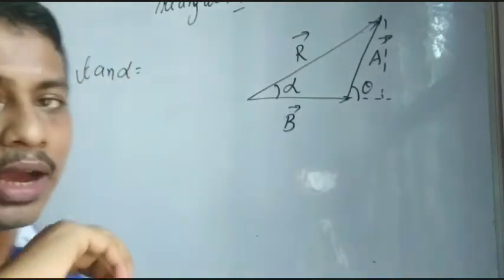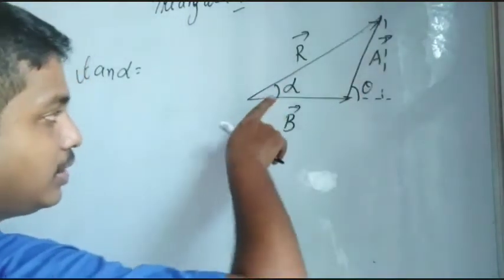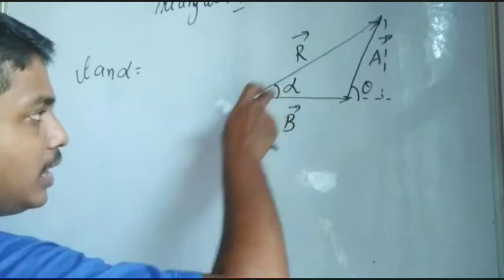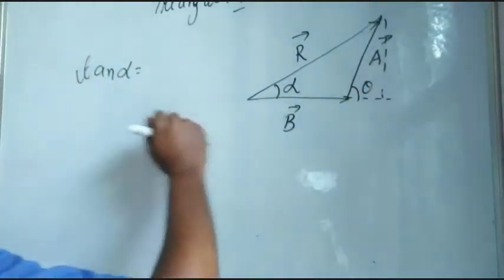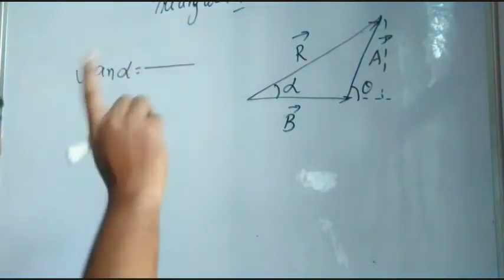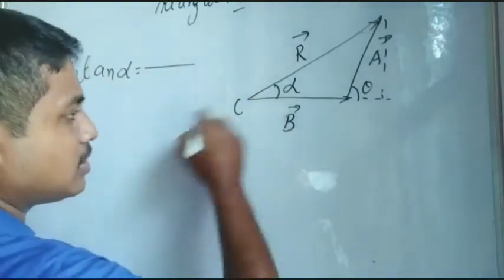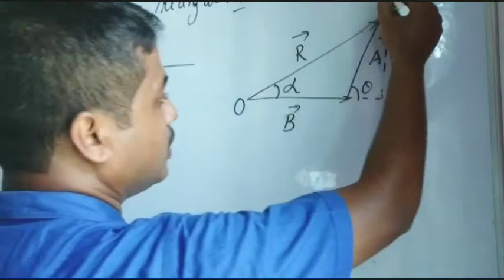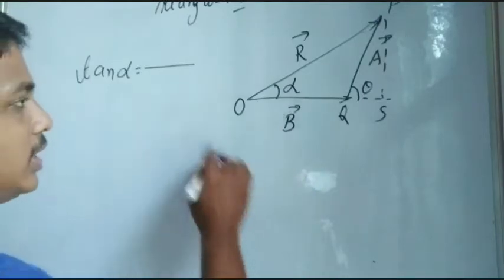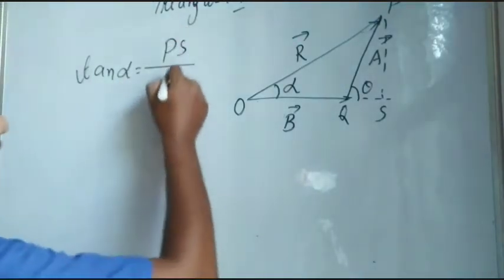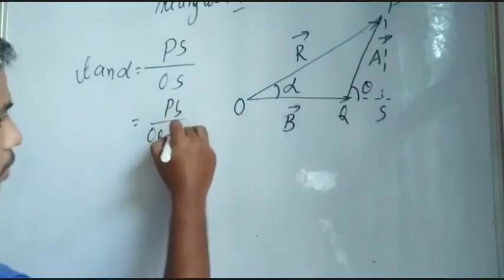To calculate the angle, we use tan alpha equals perpendicular by base. Here you can see the perpendicular, the hypotenuse, the base, and the perpendicular in the diagram. I am using the notation: this point as O, this as P, Q, and S. So tan alpha will be PS divided by OS, which equals PS divided by OQ plus QS.